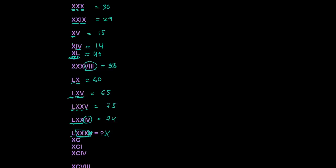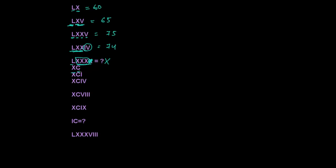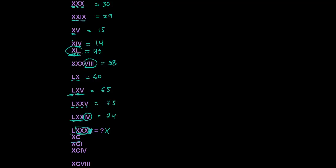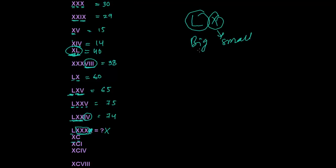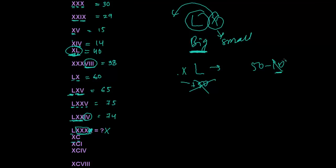Now XC — which one is bigger? The same as XL: X is smaller and L is bigger, so whenever you get this kind of thing, the smaller is being subtracted. The bigger number is always your base. If you write X before L, it means you're subtracting — from 50 you're subtracting 10. Similarly here, C is bigger, so from 100 you're subtracting 10, which means XC is 90.